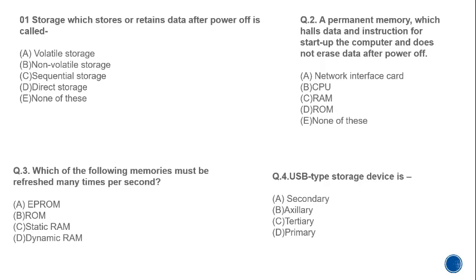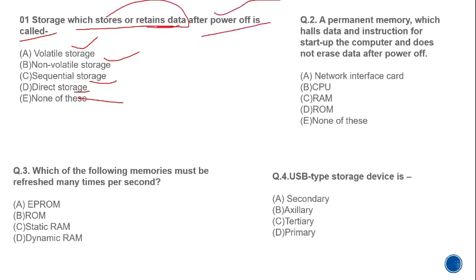MCQ 1: Storage which retains data after power is off is called — volatile, non-volatile, sequential, or direct? Any storage that needs power to store data is volatile. Storage that retains data even when power is off is non-volatile, meaning it does not need electricity. The correct answer is B: non-volatile.